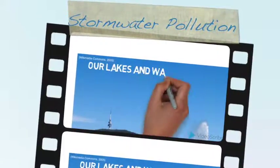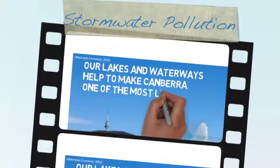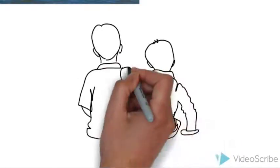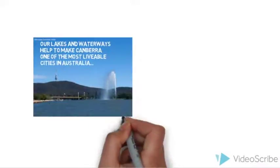Our lakes and waterways help to make Canberra one of the most liveable cities in Australia. The lakes and rivers around Canberra are popular places for relaxation and recreation and they help to add to the scenic beauty of our landscape.